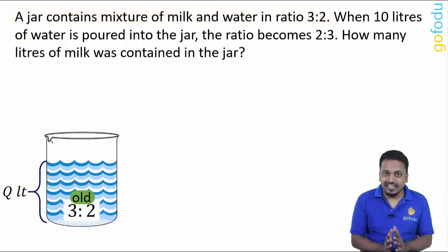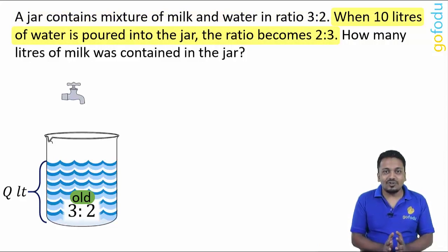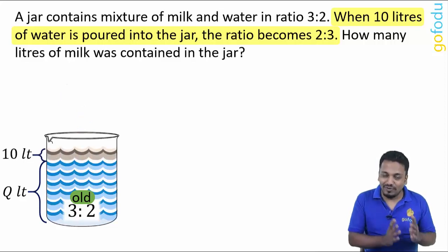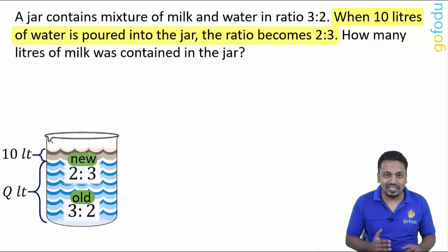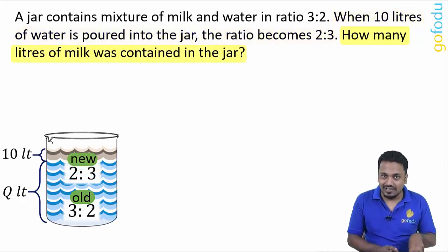When 10 liters of water is poured into the jar, the ratio becomes 2:3. So 10 liters of water is poured into the jar and now the new ratio of milk and water is 2 to 3. We have to find quantity of milk in the jar, which we can easily find if we get the value of Q.